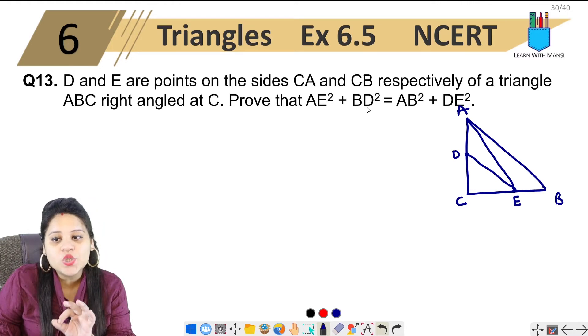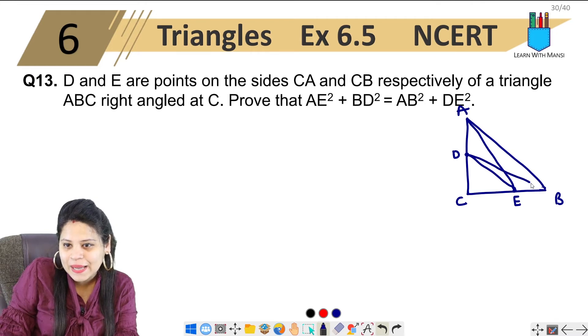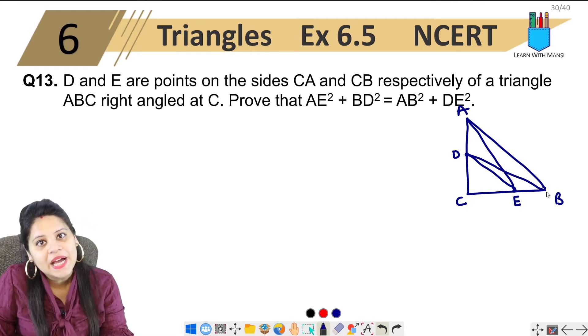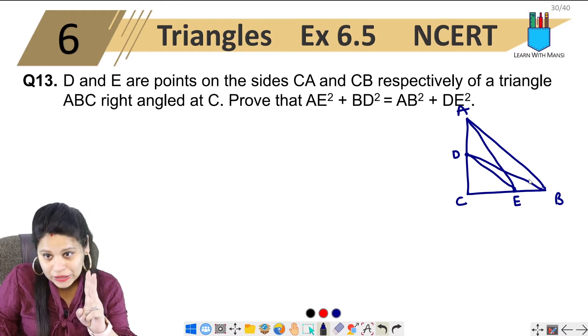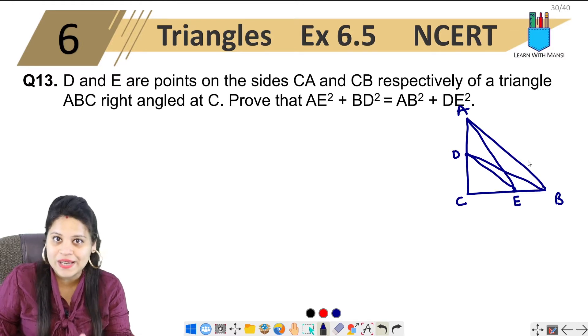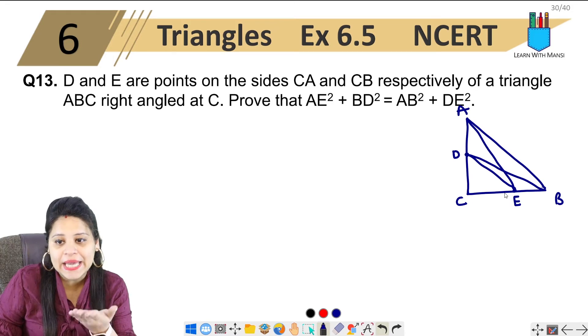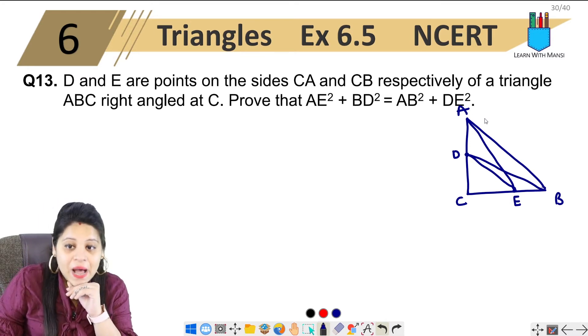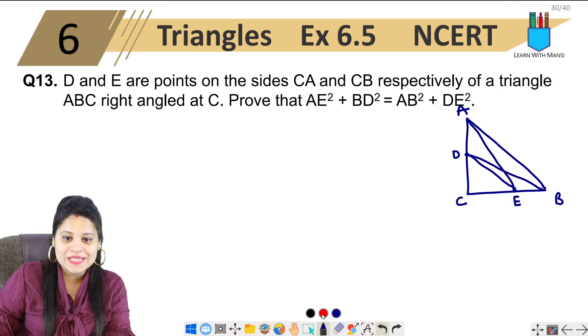Now, AE square equals BD square. So here we have BD. BDA is a right angled triangle. So here it means we have one big triangle, one small triangle, four right angle triangles total. Now if we talk about here, then AE square plus BD square equals AB square plus DE square.